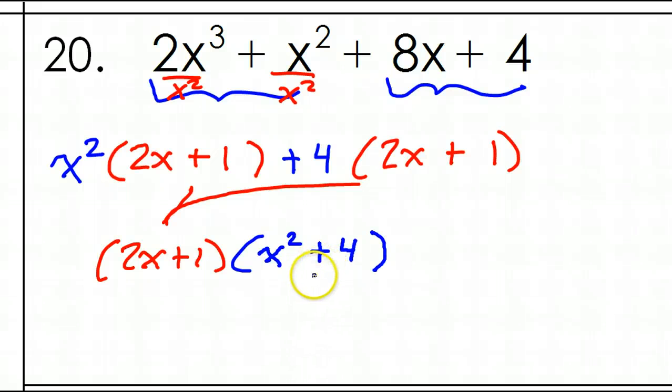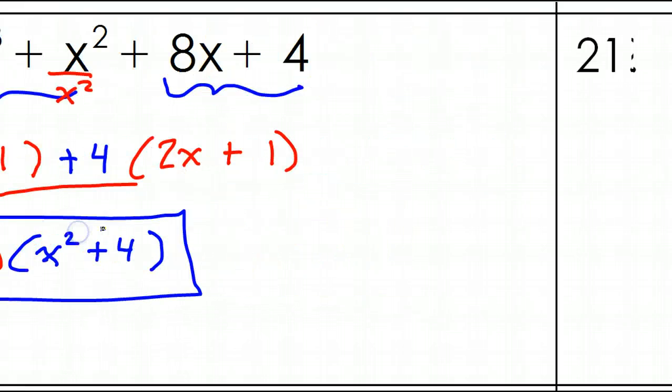Now, you should always look at this and check and see, especially when you see something squared, can you factor this further? Now, the answer here is no. If this had been a minus four, then this would be the difference of two squares. And I'd go x plus two, x minus two. But, with a plus four, it's unfactorable. So, this is actually the final answer.